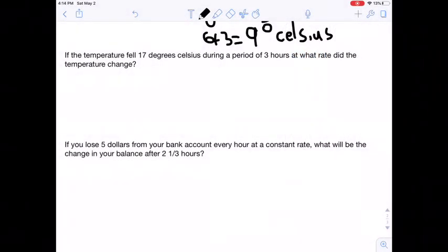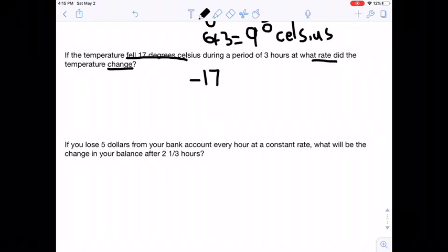If the temperature fell 17 degrees Celsius during a period of three hours, at what rate did the temperature change? So this is another change, but it's the rate. So and it's also fell 17 degrees Celsius. So it fell at 17 degrees Celsius. So it'd be negative 17 is the net change, right? Because it fell at negative 17.